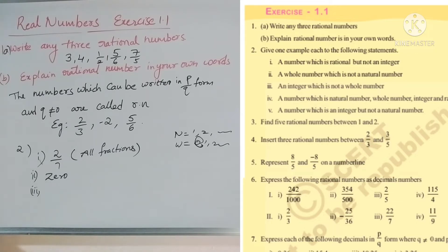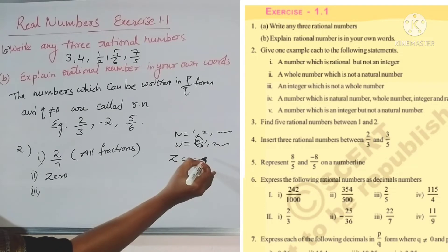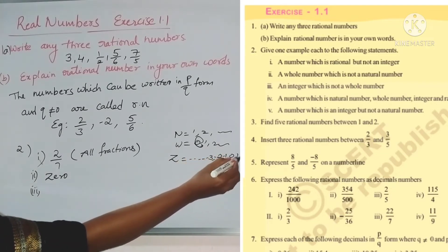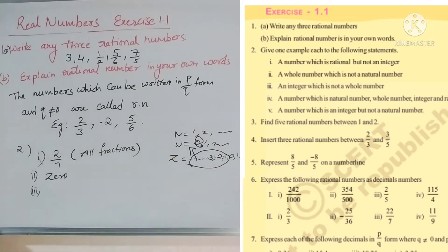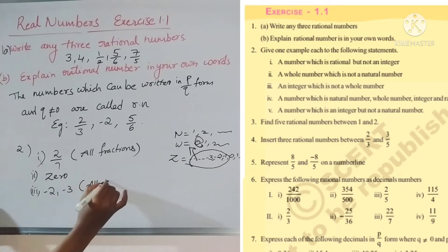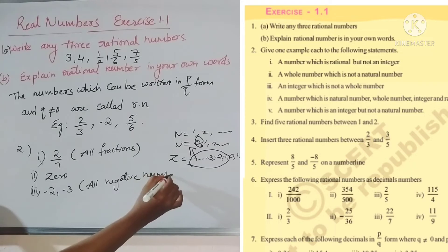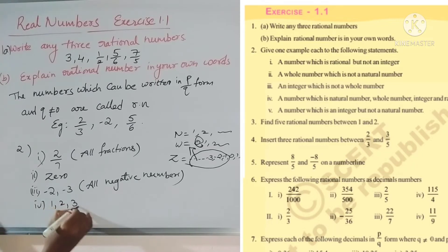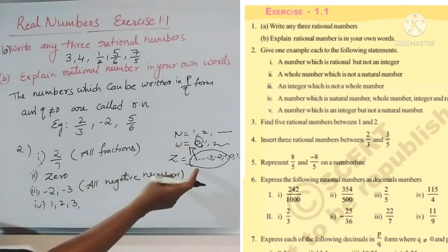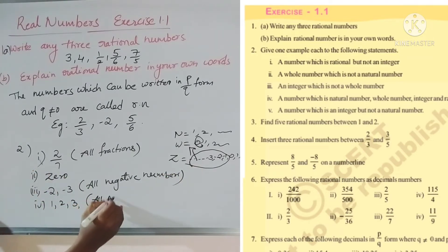Integers include negative numbers, zero, and positive numbers. Whole numbers start from zero. So all the negative numbers are not whole numbers. Therefore, for 'an integer which is not a whole number,' the answer is any negative number, for example minus one. Fourth statement: a number which is a natural number, whole number, integer, and rational number — the answer is all natural numbers, since natural numbers belong to all those sets.